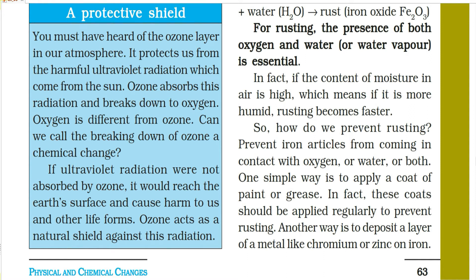Another way is to deposit a layer of a different metal on top of the iron. Since rusting only affects iron (Fe + H2O + O2 → iron oxide), if we replace the surface layer with zinc or chromium, rusting will not occur, as zinc oxide does not rust the same way.